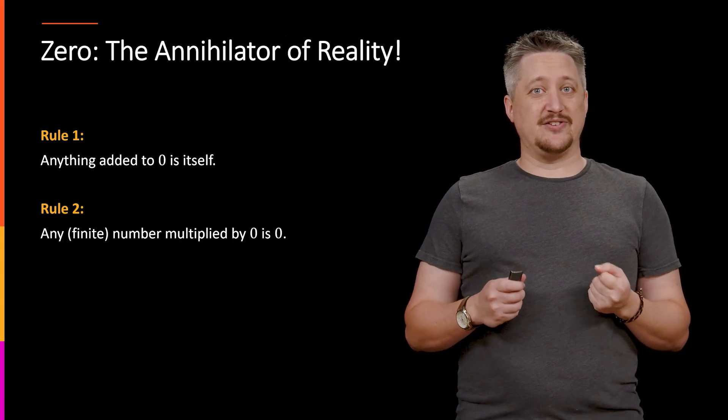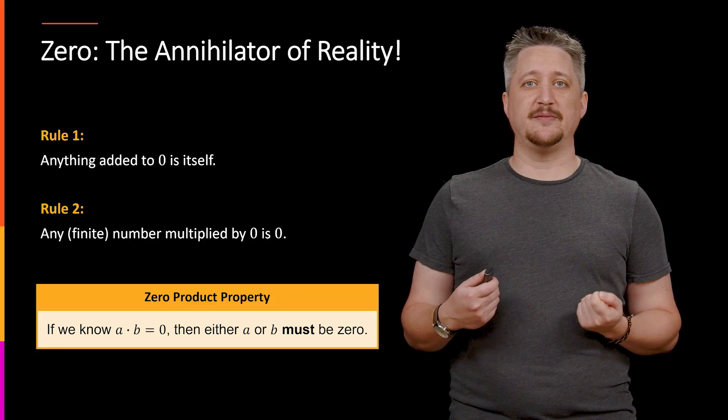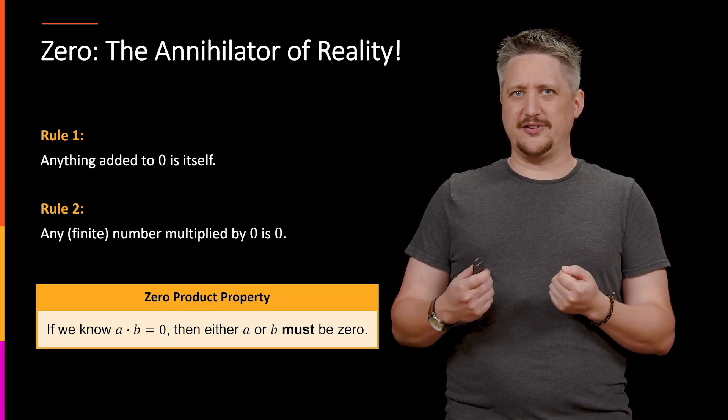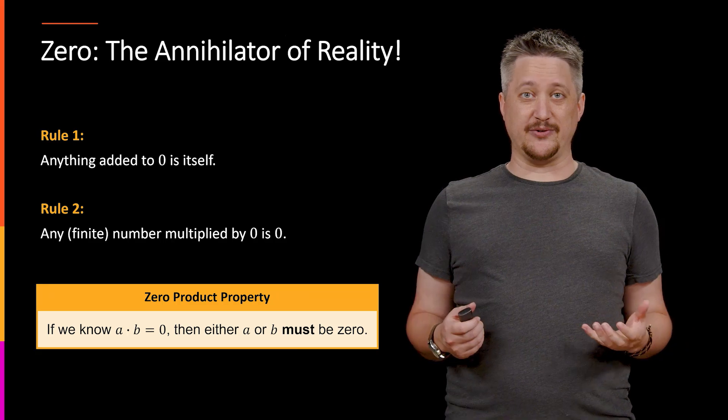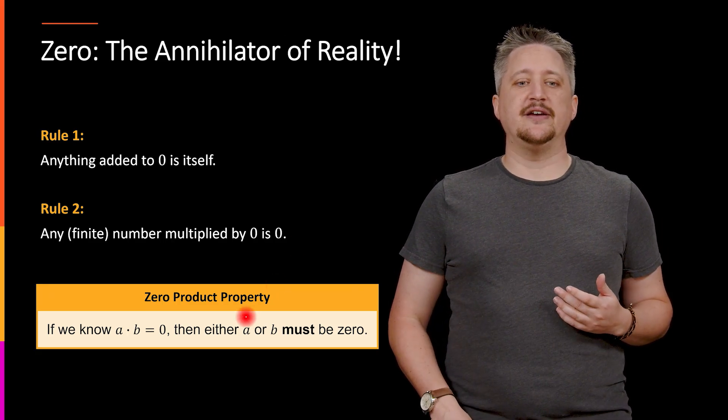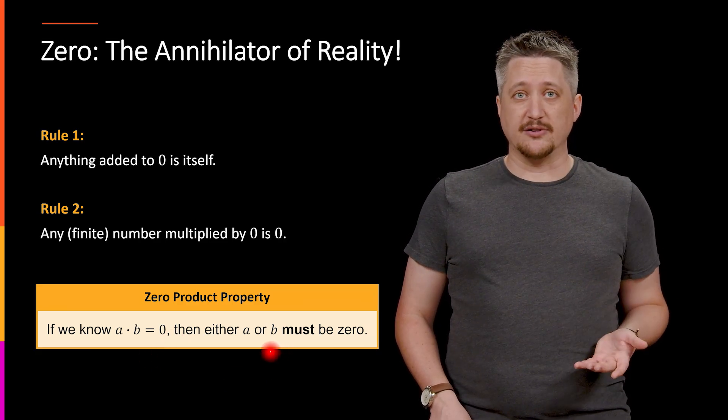But it turns out that this gives us a very handy tool, and that tool is the zero product property. This is something that's going to be recurringly important and actually is the basis of why, for example, we care about factoring in the first place. And so the zero product property tells us that if we have two numbers and they are 0, then that means one of those needs to be 0.